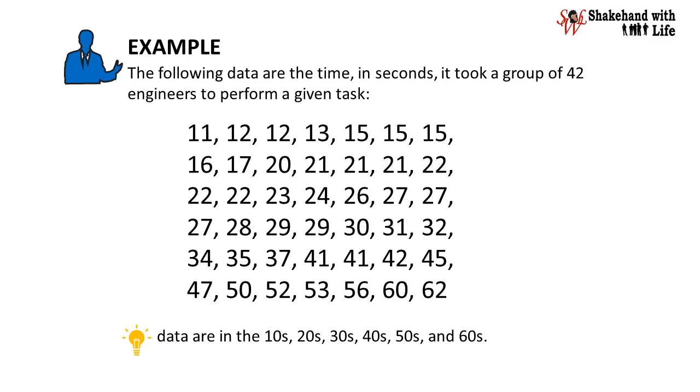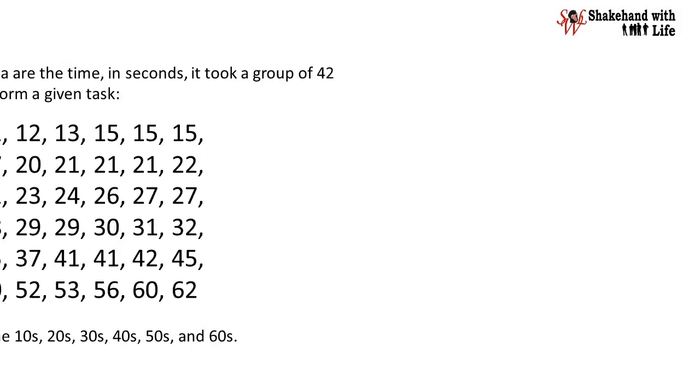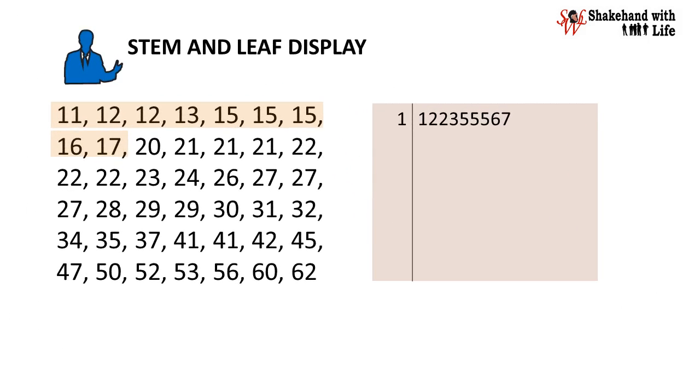The stem and leaf display of our data is shown here. For stem 1, the corresponding leaf is 122355567. For stem 2, the leaf is 0111222346777899. For stem 3, the leaf is 012457.